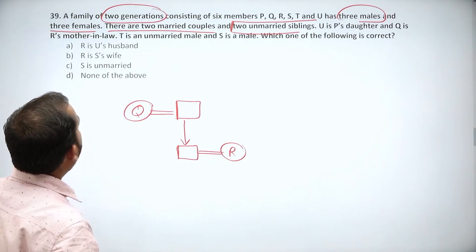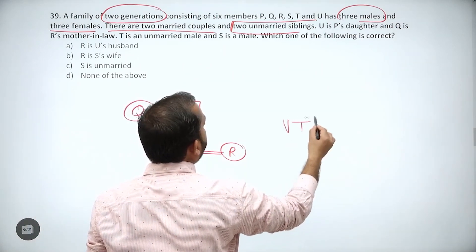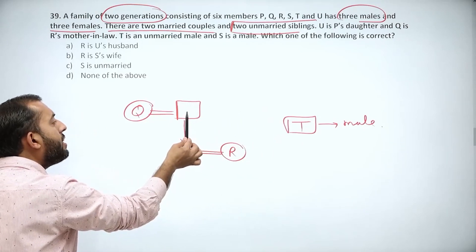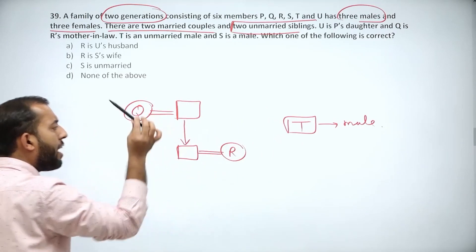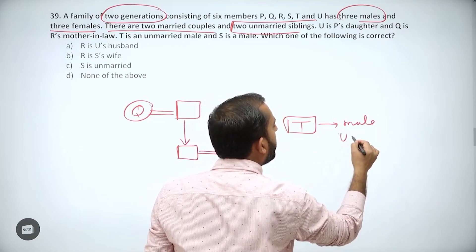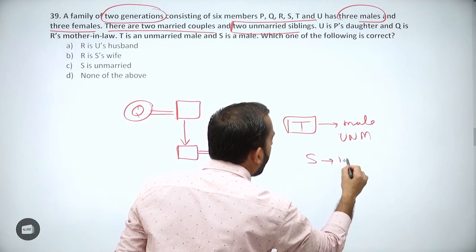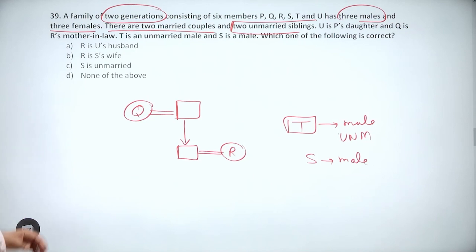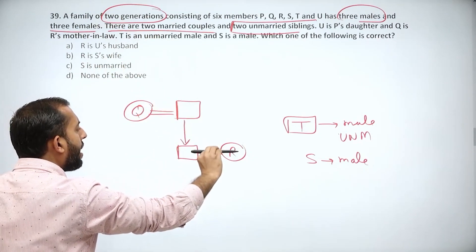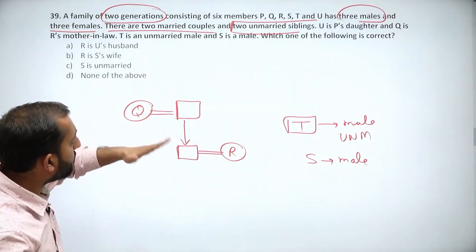T is an unmarried male and S is a male. Since T is unmarried, T cannot be the husband of Q or R. There are only two generations - Q and her husband are the first generation, and R and her husband are the second generation. All six members must fit into these two generations.